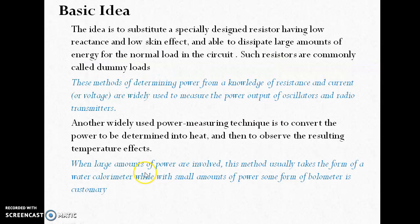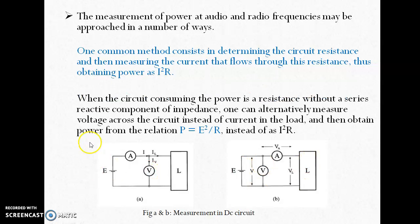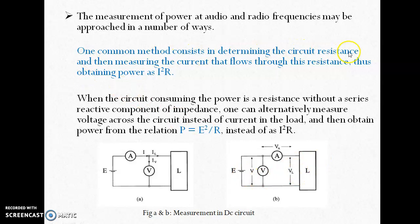Basically, if we have a circuit where we have to measure the power dissipation of a load, we can use a voltmeter and ammeter to find out the power. The common method is to determine the current flowing through the circuit resistance, and if we know the resistance value, we can find out the power using the formula I²R.